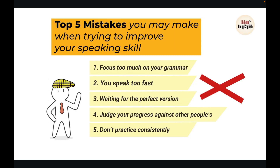Top five mistakes when trying to improve your speaking skills: first, focusing too much on grammar — speak freely and don't focus only on grammar. Second, speaking too fast. Third, waiting for the perfect version — just start speaking on any topic. Fourth, judging your progress against other people's. Fifth, not practicing consistently. These are the five mistakes to avoid when improving your speaking skills.